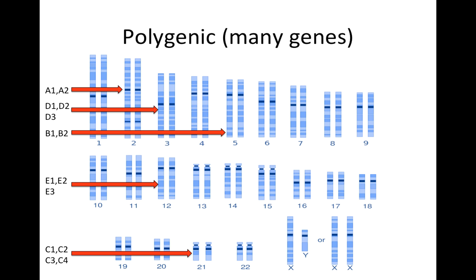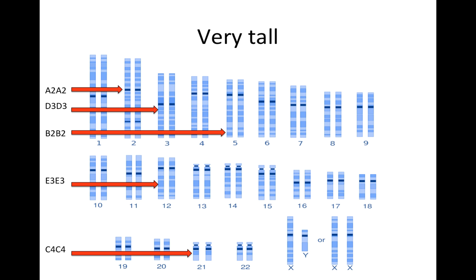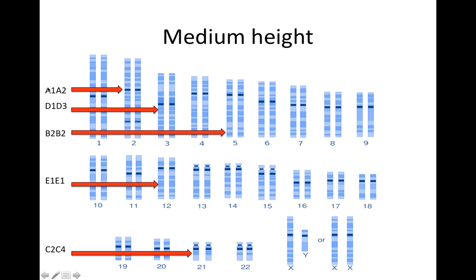So the low numbers are alleles associated with short stature, and the higher numbers are alleles associated with tall stature. That would mean if you have an individual who has lots of high-numbered alleles — alleles 2, alleles 3 — we'd expect this to be a very tall individual. Whereas if we have all 1s, all associated with shortness, we'd expect a very short individual. And if we have something in between, we might expect an individual with medium height, and there'd be all kinds of different combinations for individuals we'd expect to have medium height.